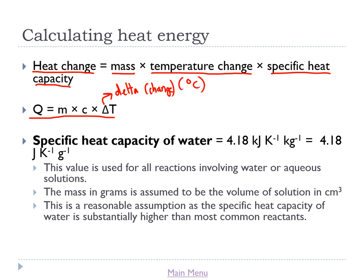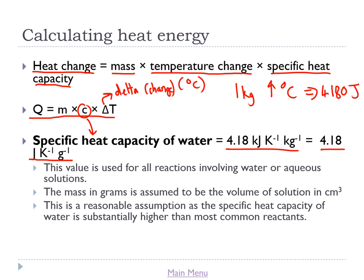Specific heat capacity — the C in our equation — is a property of all materials. All materials have their own different specific heat capacities. In the case of water, the specific heat capacity is 4.18 joules per kelvin per gram. What that means is: if I took 1 kilogram of water and wanted to increase the temperature by 1 degree Celsius (1 kelvin — the same thing), that would take 4,180 joules of energy. We'll use 4.18 joules per kelvin per gram because we're generally going to work with grams rather than kilograms in our calculations.